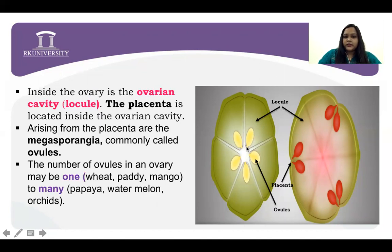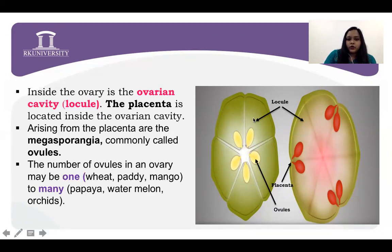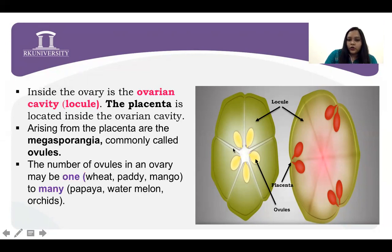Arising from this placenta, in common word it is called ovule, or in scientific terminology we can say it is megasporangium. Megasporangium is attached to the placenta. The number of ovules in the ovary may be one — example: paddy or mango, in which only one ovule is present — or in many cases there are many ovules, which will generate many seeds.